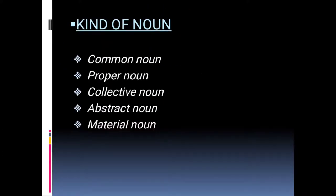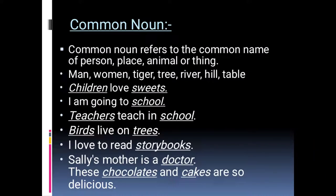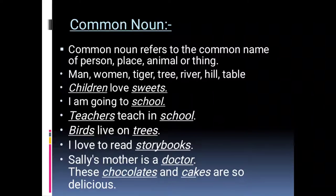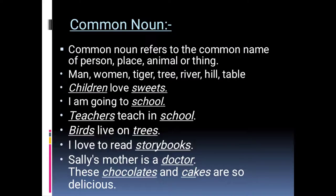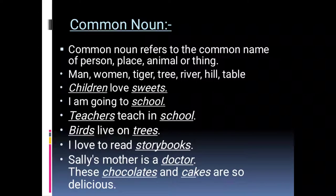There are five kinds of noun: common noun, proper noun, collective noun, abstract noun, and material noun. What do you mean by common noun? Common noun refers to the common name of a person, place, animal, or thing. Common noun does not talk about a particular person, particular place, particular animal, or particular thing. Examples of common noun: man, woman, tiger, tree, river, hill, table, children, school, teacher, birds,